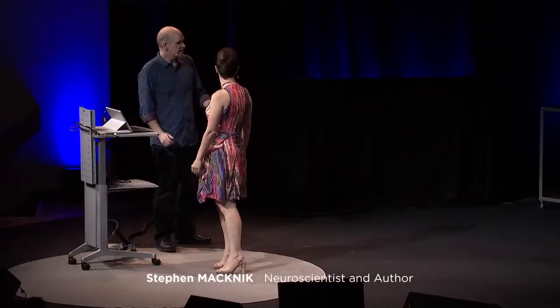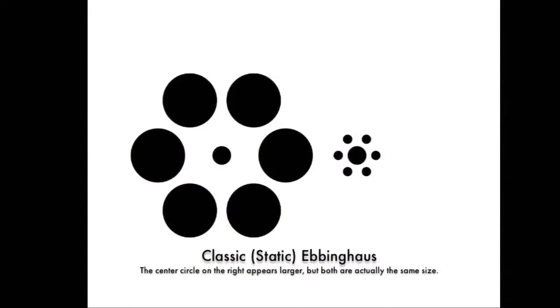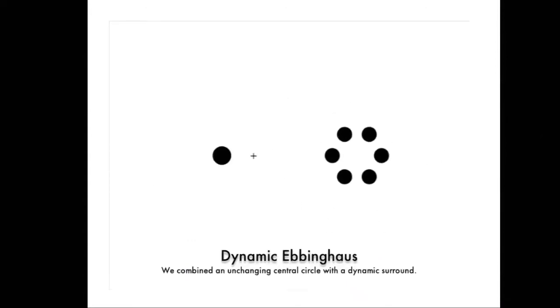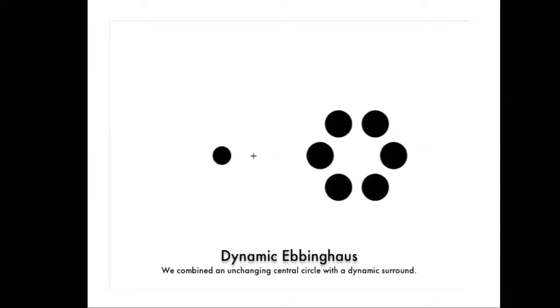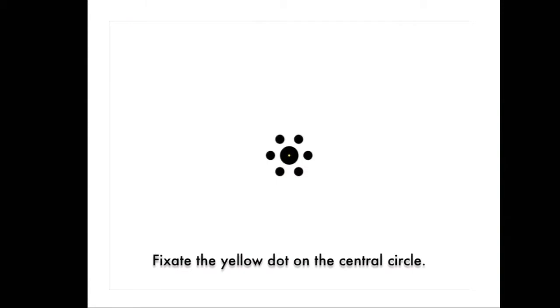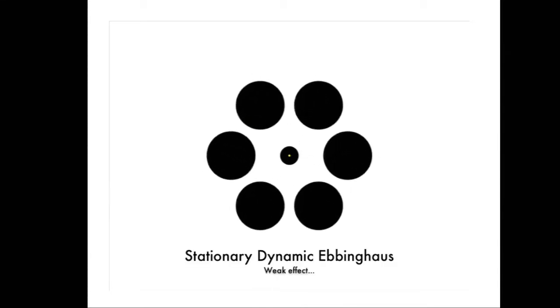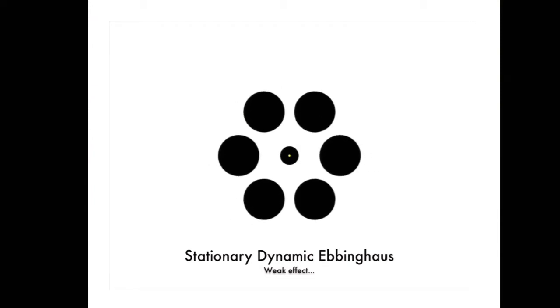You just keep telling yourself that. Okay, so this is called the dynamic Ebbinghaus illusion. We see two circles here in the middle. One's small and one's big. They're actually the same size. And they only look different because of the surround. But what if we took the circle out and just changed the surround? Nothing's happening here because they're separate. But if we put this one in the center, you can see that as the surround changes size and the center stays still, there's actually a little bit of a change in size there. But it's kind of weak.